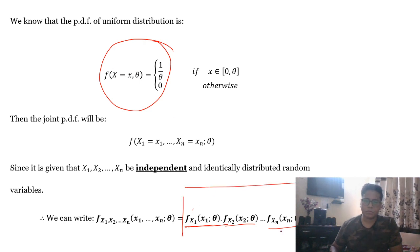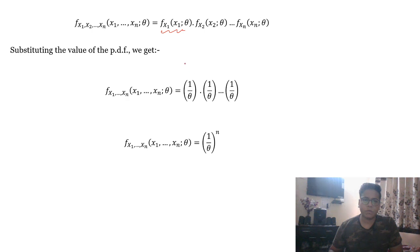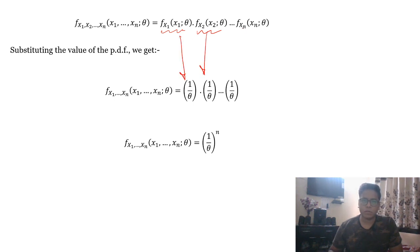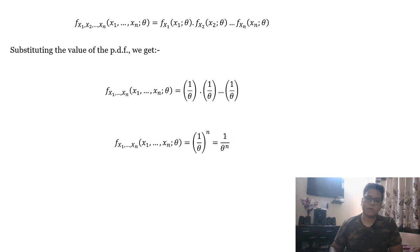Now we substitute the values. The PDF of X₁ is 1/θ, the PDF of X₂ is 1/θ, and so on. If we multiply these n times, we get 1/θⁿ. So the joint PDF equals 1/θⁿ, which we can write as θ raised to the power negative n. We are done with part A.